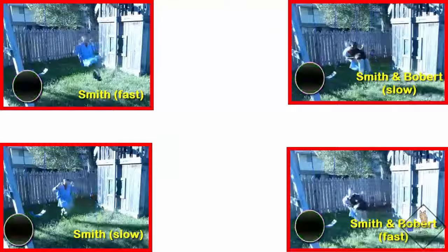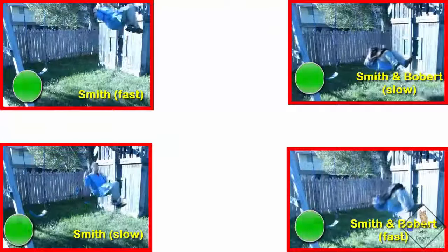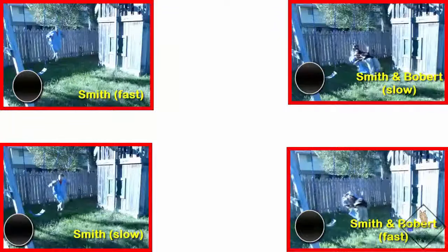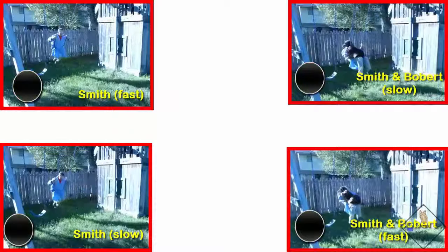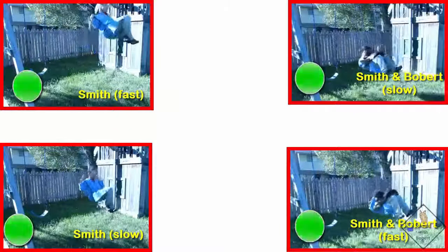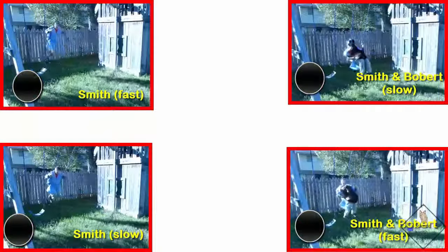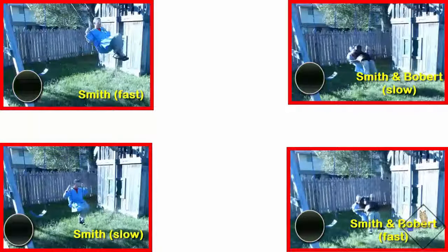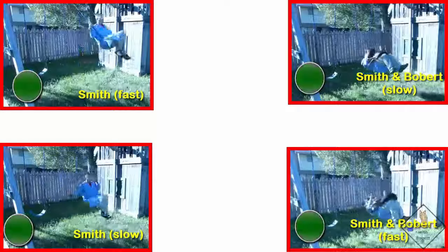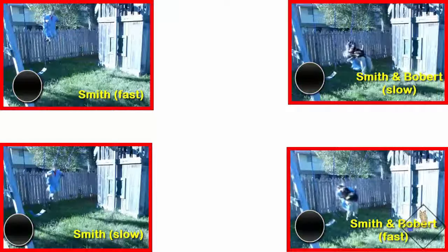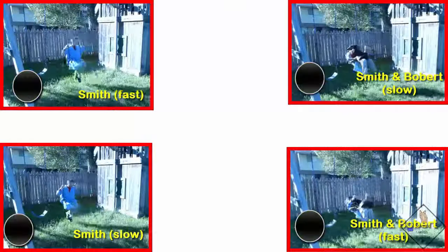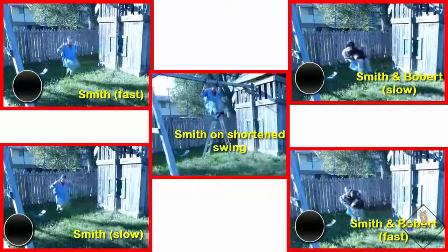So it does not matter who is in the swing, or how fast they swing, their frequency is always 0.5 Hertz. In fact, the only way to change the frequency of this swing, or any swing for that matter, is to change the value of gravity of the planet you are swinging on. But that's kind of hard. Or change the length of the swing. Check this out.